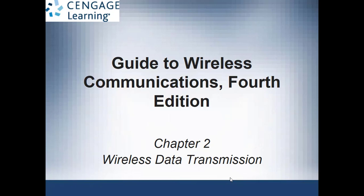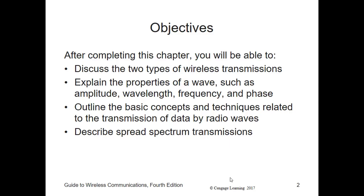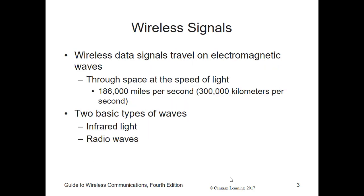After reading this chapter, you'll be able to discuss the two types of wireless transmissions. We're going to look at wave properties: amplitude, wavelength, frequency, and phase. We'll outline basic concept techniques related to the transmission of data by radio waves, and describe spread spectrum transmissions and how they work with the different types of signals being spread throughout.